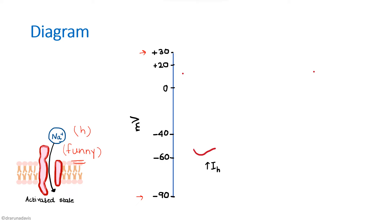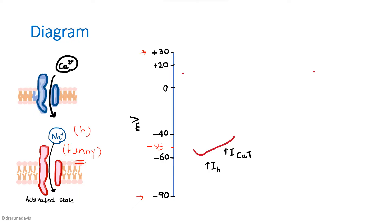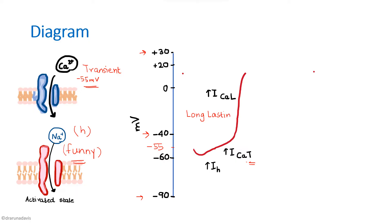The H channels raise the potential to around minus 55 millivolts. At minus 55 mV, the next set of channels — the transient calcium channels (T-channels) — open up. These T-channels bring the voltage up to around minus 40 mV. Once minus 40 is reached, the long-lasting calcium channels (L-channels) open, and depolarization is driven by this long-lasting calcium current.